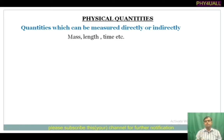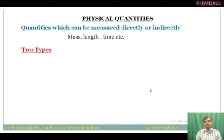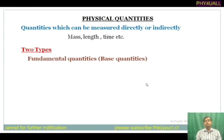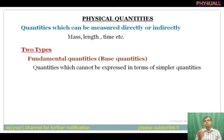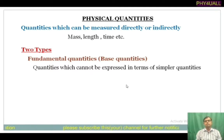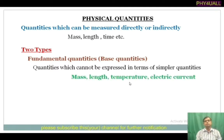Now these physical quantities are mainly divided into two types. The first one is fundamental quantity, also called base quantity. The quantities which cannot be expressed in terms of simpler quantities are called fundamental quantities. Examples include mass, length, time, temperature, electric current, etc.